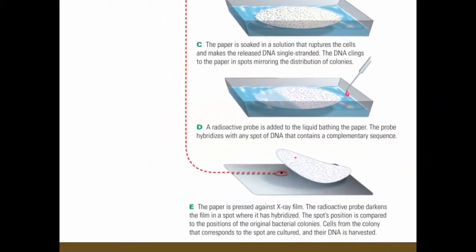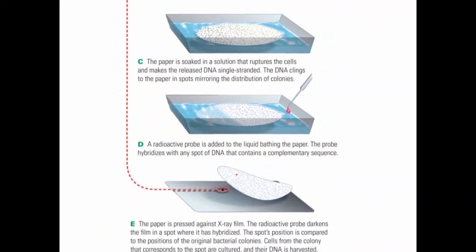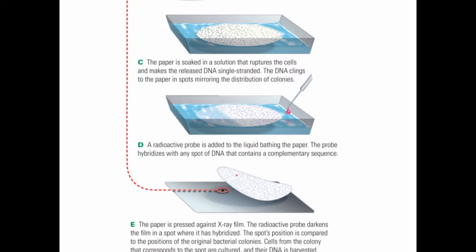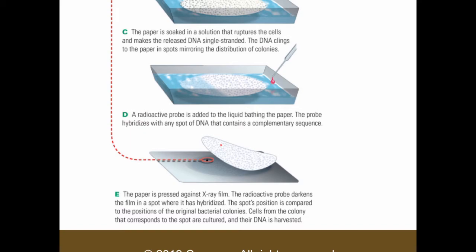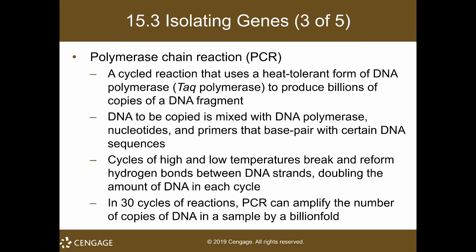You then add a radioactive probe, which attaches to the DNA fragment you are looking for. Since the probe contains a tracer — usually radioactive, though currently fluorescent tracers are more popular — you can detect it. Using fluorescence, a spot will light up on the paper, and you retrieve that spot. That is the colony containing the gene you are looking for.